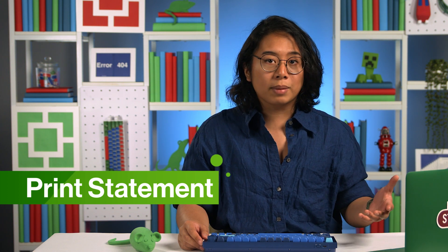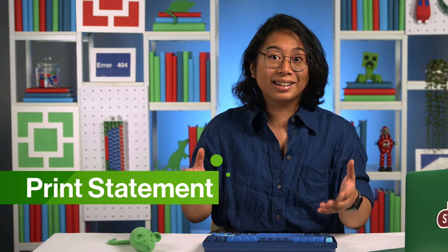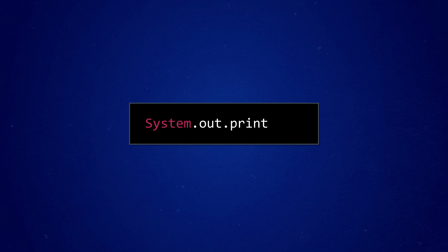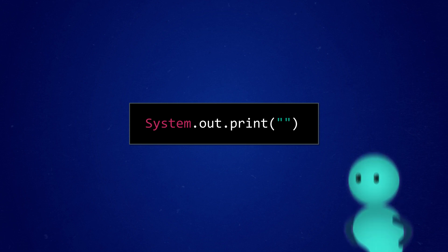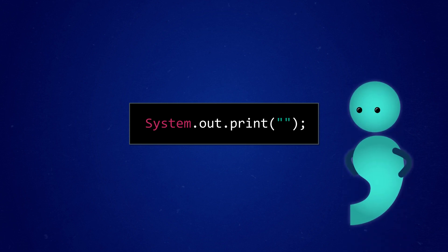That can be anything from a simple confirmation message to a fully formatted analytical data report. To create a print statement in Java, we type system.out.print, followed by parentheses. Inside these parentheses, we can put whatever text we want to display in quotation marks, and then end the entire statement with a semicolon, like we always do in Java.